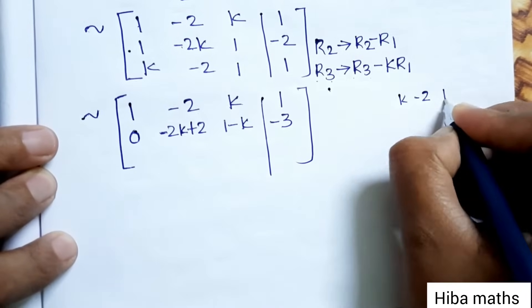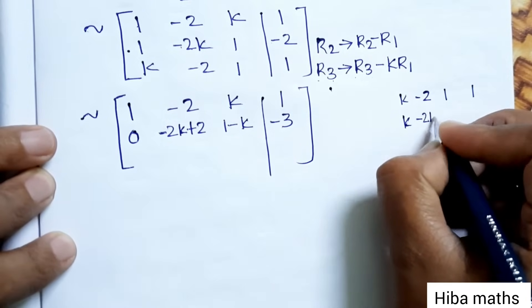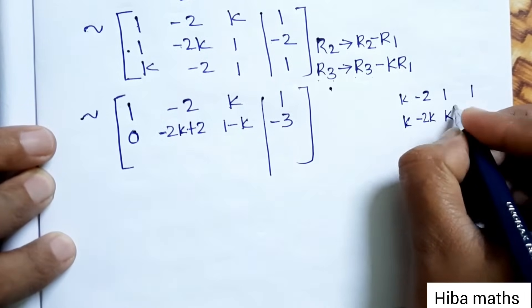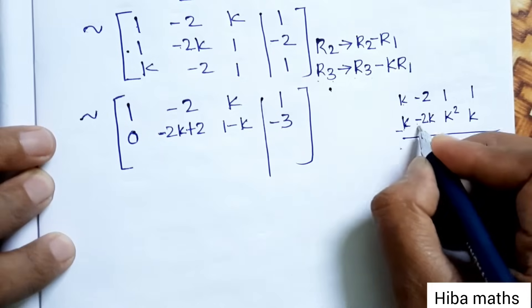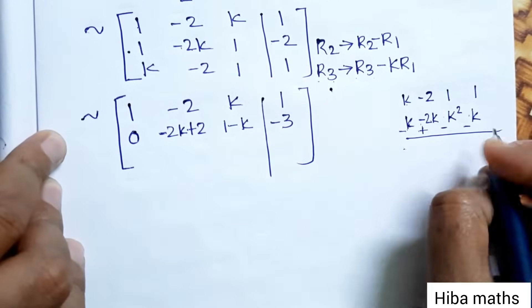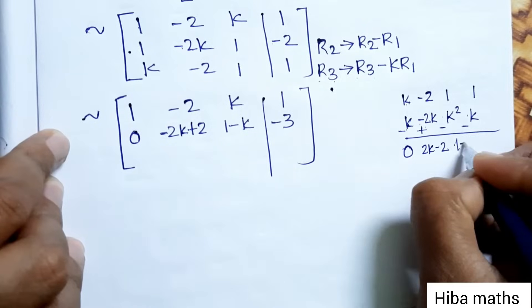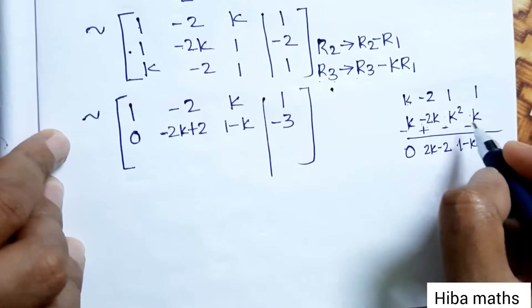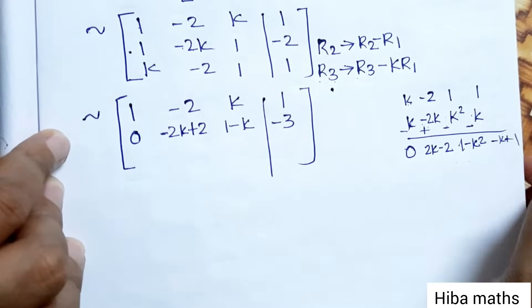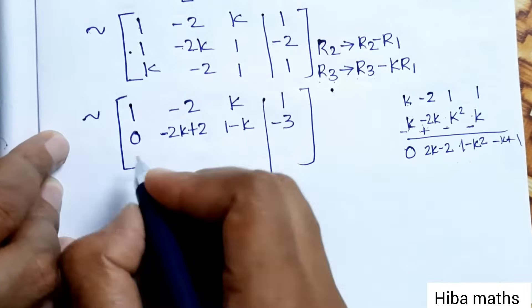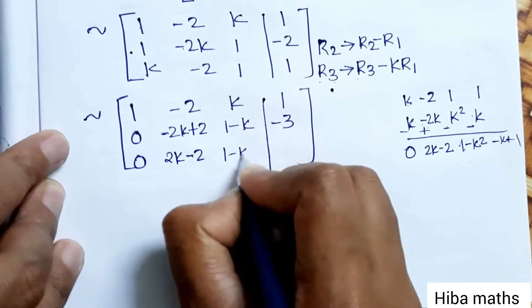After applying R3 → R3 - k·R1, the third row computation gives: k times the first row elements are subtracted. The result for the third row is: 0, 2k - 2, 1 - k², -k + 1.